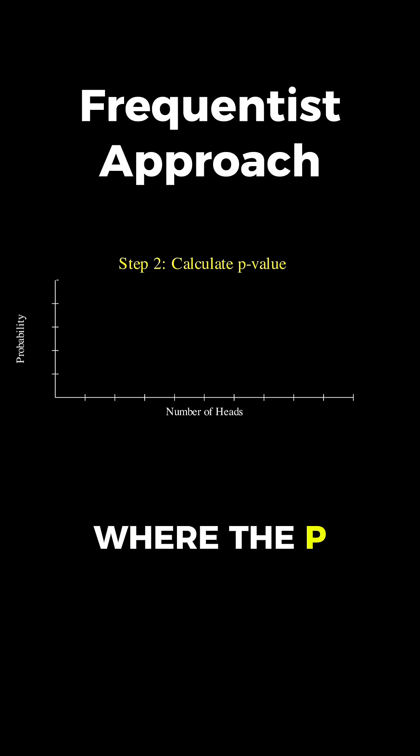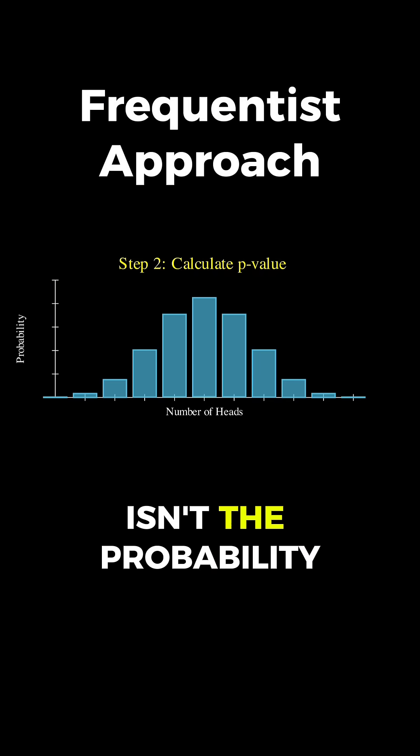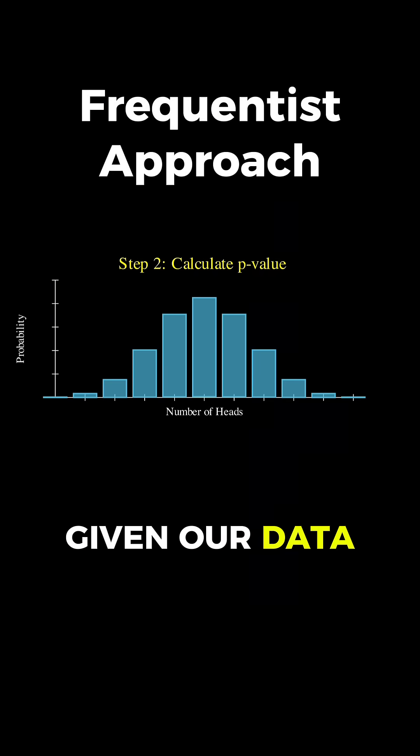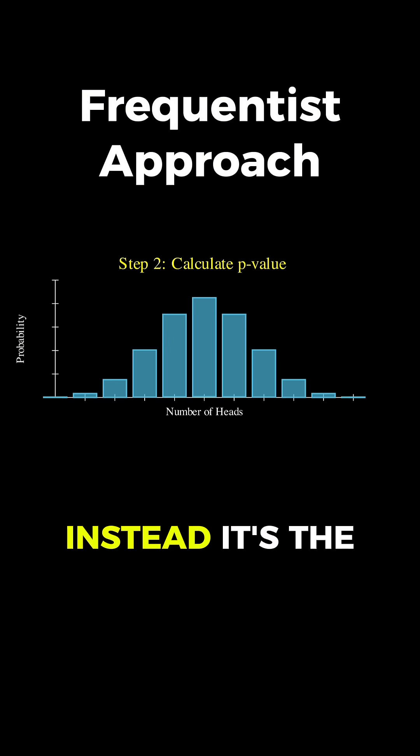Now, this is where the p-value concept becomes really important to understand correctly. The p-value isn't the probability that the coin is fair given our data, even though that's what most people think it means. Instead, it's the probability of getting data at least as extreme as what we observed, assuming the coin is actually fair.